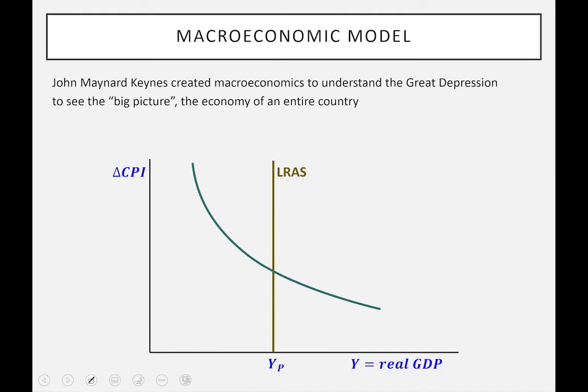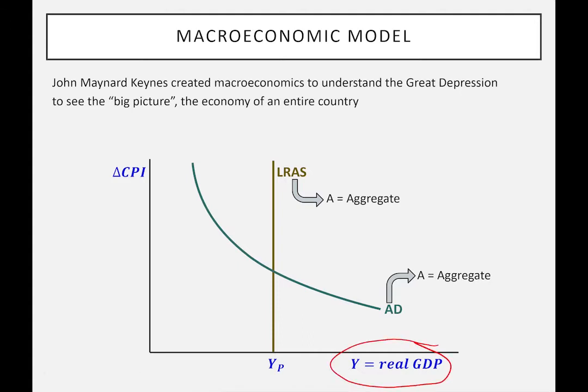Then I'm going to have this curved line — the AD curve. The two letters A and D both stand for aggregate. What we're looking at here is a single graph — a simple model of an entire country or an entire economy. So I'm going to start by showing what this GDP thing is.